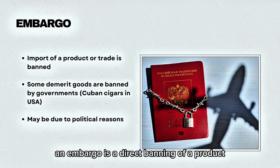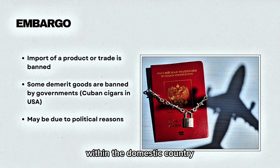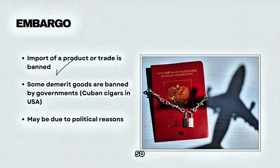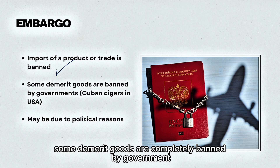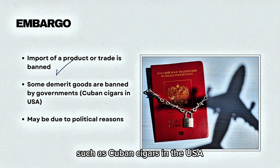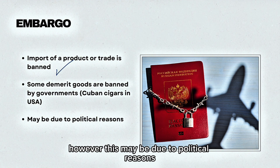An embargo is a direct ban on a product within the domestic country. Some demerit goods are completely banned by government — for example, Cuban cigars in the USA. However, this may also be due to political reasons.